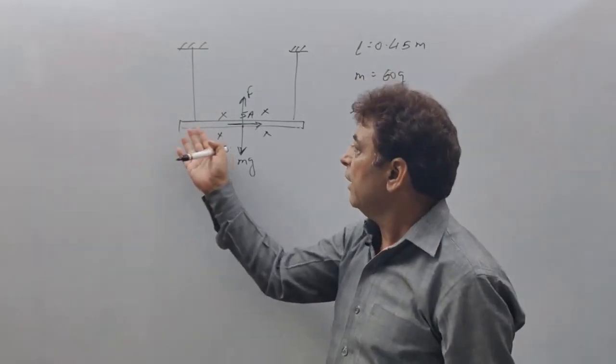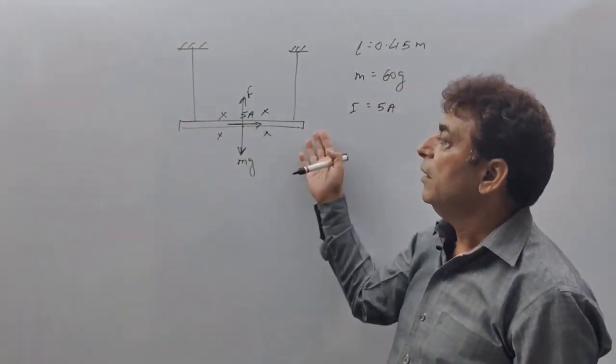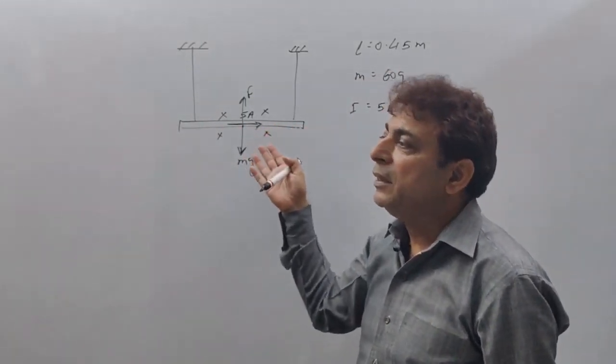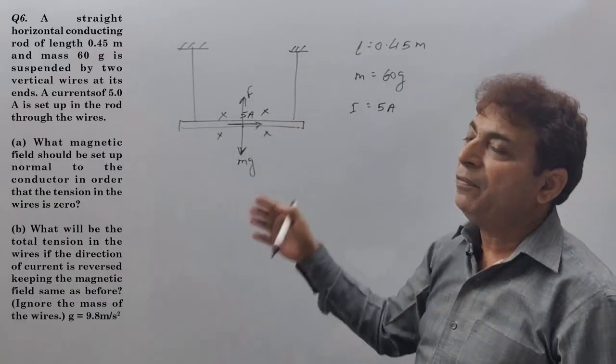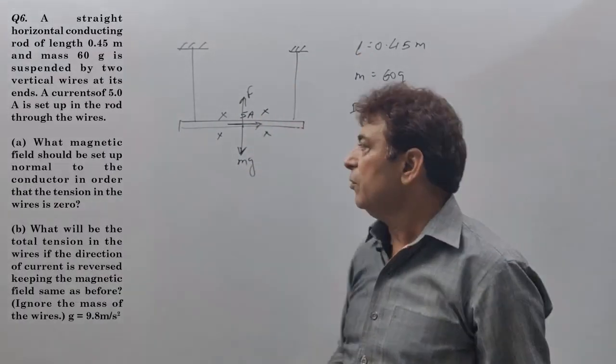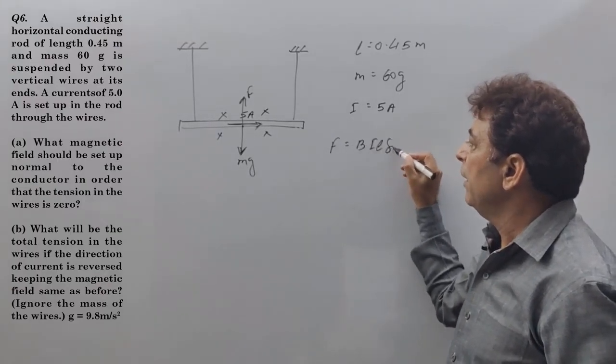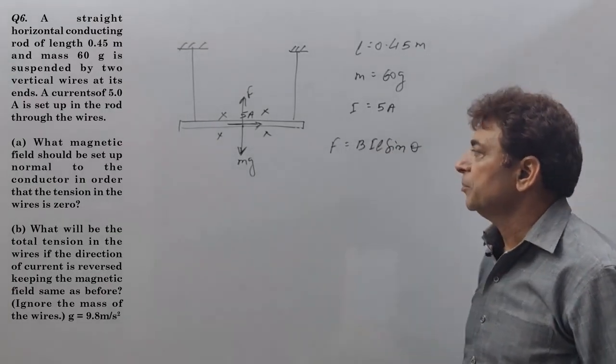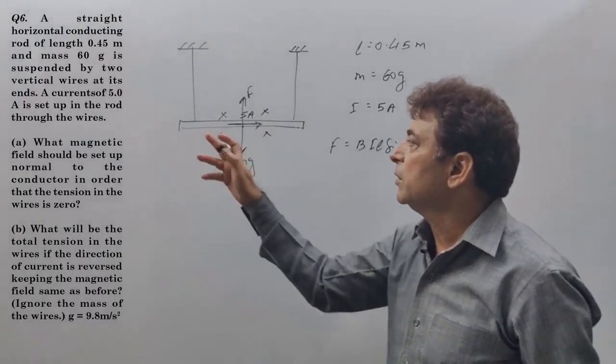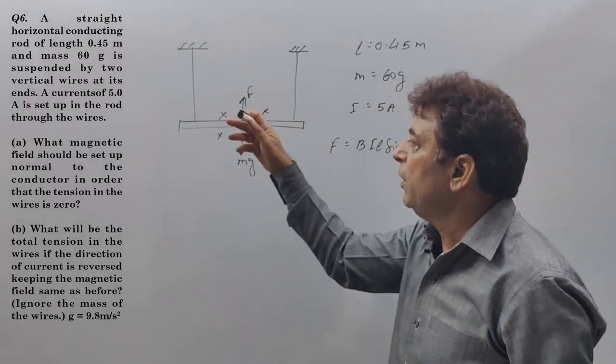A current carrying conductor in a magnetic field experiences force given by Fleming's left-hand rule and the formula is BIL sin theta. Theta is 90 degrees because current is there and field is perpendicular.